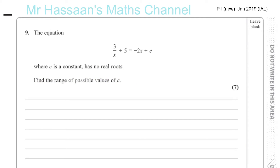What they're trying to tell us is this equation will have no solution. That means the line on this side of the equation, or the curve on this side of the equation and on that side of the equation, will never intersect. We want to find the possible values of c such that this will be true.